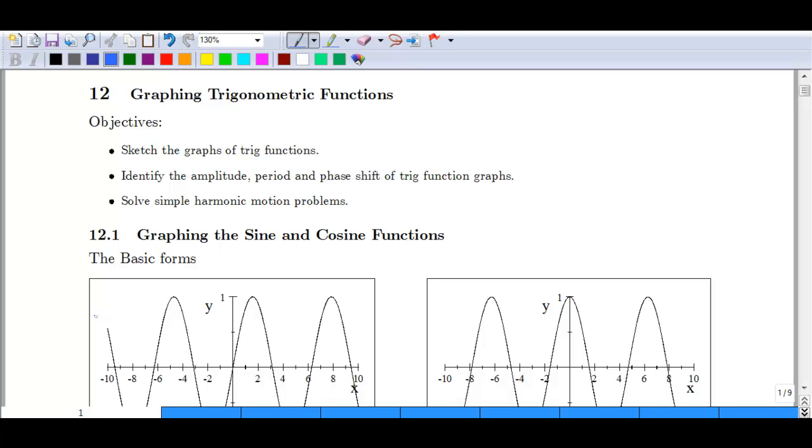Now, before we get started, let's just review real quickly our trig functions. If you recall, sine of theta is your opposite side of a triangle over your hypotenuse. Cosine of theta is your adjacent side over your hypotenuse of a triangle. And tangent of theta is equal to the opposite side over the adjacent side.